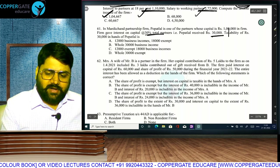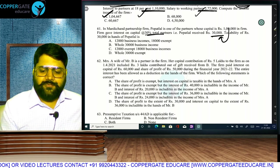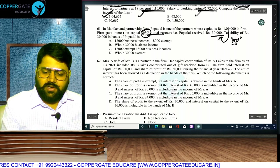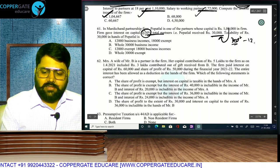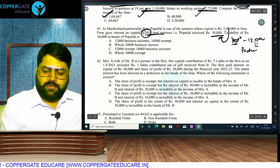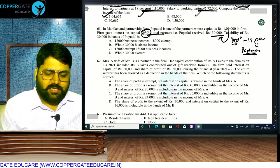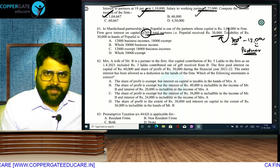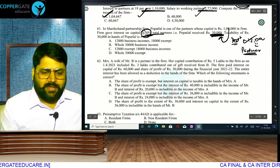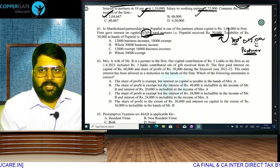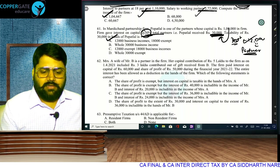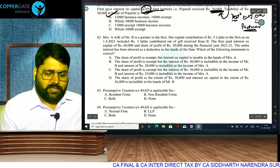Manikchand partnership firm: Poperlal has capital of 1 lakh; firm gave interest at 30%, so Poperlal received 30,000. The firm gets deduction only of 12% (12,000); the partner pays tax only on 12,000 (the deductible portion). The disallowed 18,000 is exempt for the partner. So: 12,000 is taxable for the partner and 18,000 is not taxable.